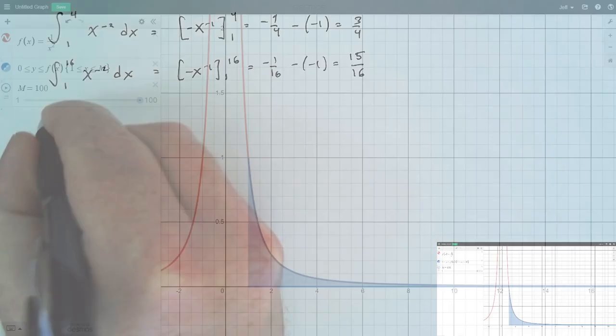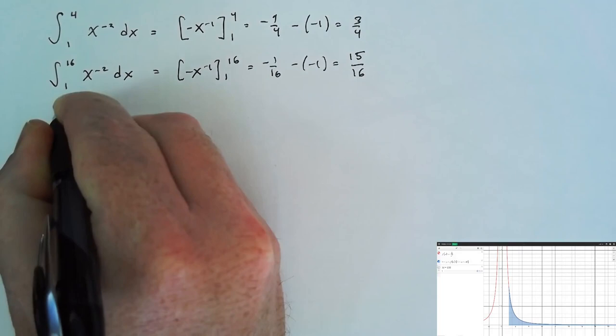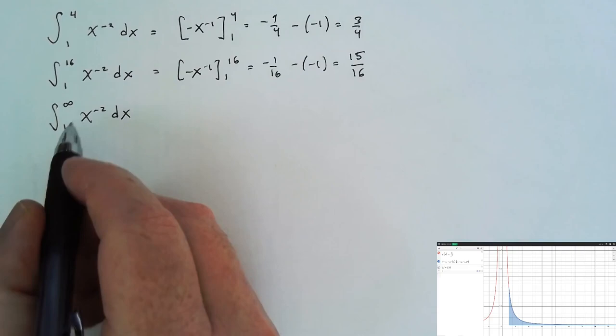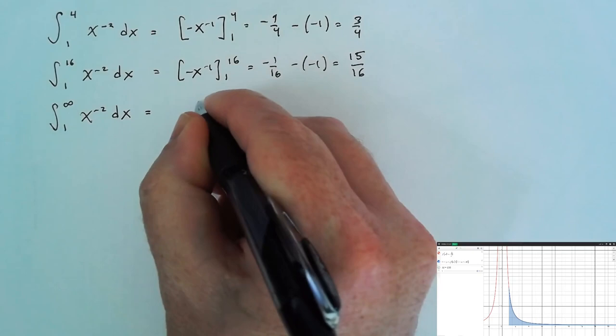In other words, would it make sense to find the integral from 1 to infinity of x to the negative 2 dx? We've only defined definite integrals when both of these endpoints of integration are finite. So let's replace the upper infinite endpoint with a massive number m, and then take the limit as this massive number heads to infinity.